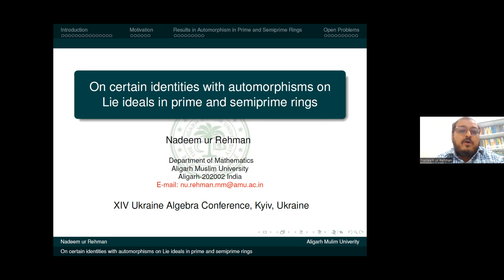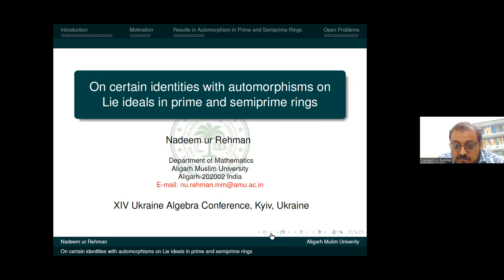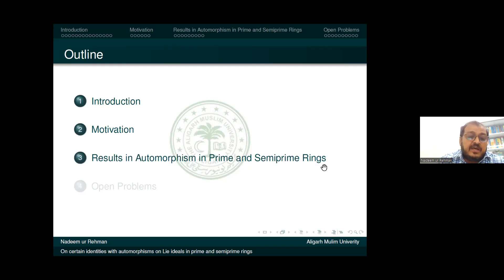Today I will speak about certain identities with automorphism only ideas in prime and semi-prime rings. I will divide my talk into certain portions: first, an introduction where I fix some notations, then I go to the motivations, then the results I obtained, and at the end I have some open problems for those working in this direction.